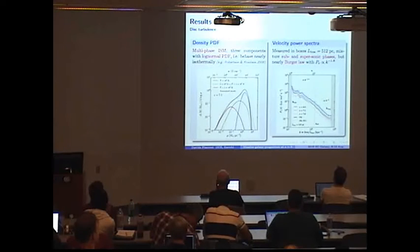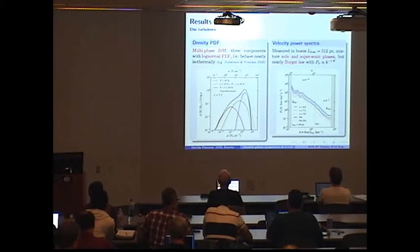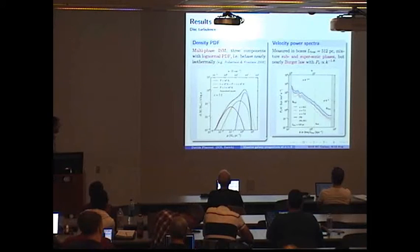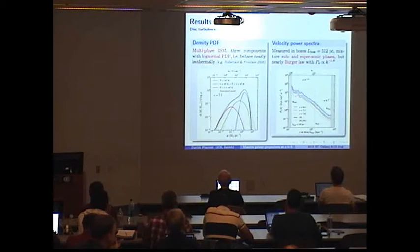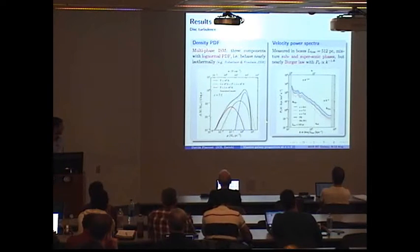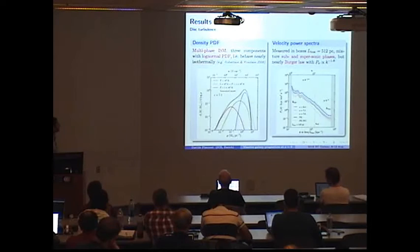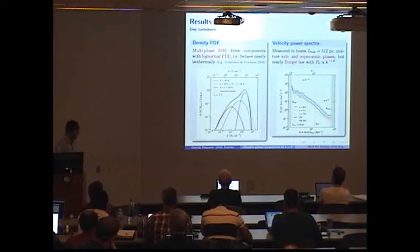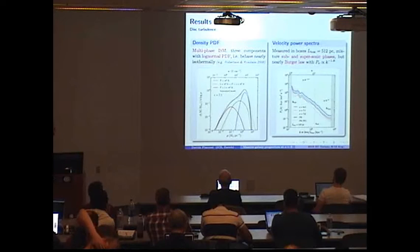So we also try to characterize a bit more the properties of the turbulence within the disk, first looking at the gas density probability density function, which again reveals that the gas is highly multiphased. Indeed, it can be easily described by three components, a cold component of about 1,000 Kelvin or below, a warm component of about a few tens of thousands of Kelvin, and a warm-hot component beyond 50,000 Kelvin, with all of them having a kind of log-normal PDF. We also calculated the velocity power spectra within some small boxes in the galactic disk. And despite the mixture between the subsonic and supersonic phases, the typical spectrum seems to be consistent with a Burgers' law for supersonic compressible turbulence, as expected.